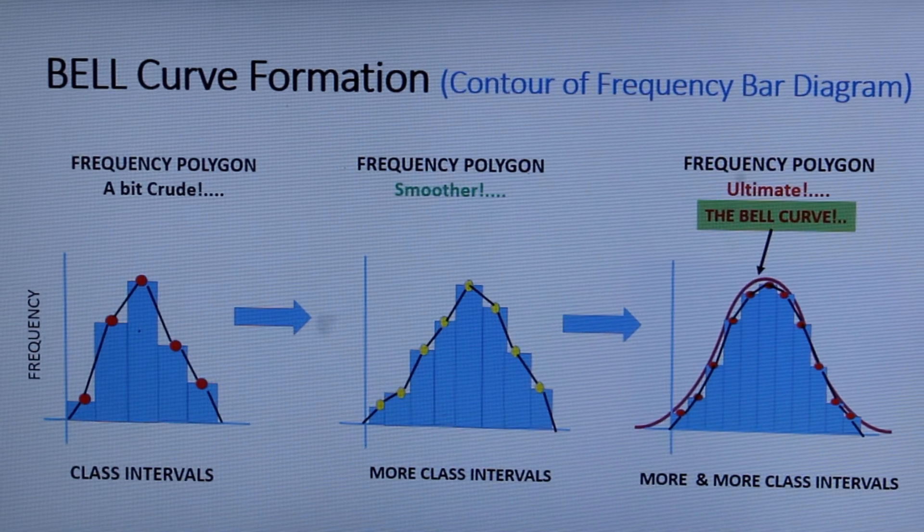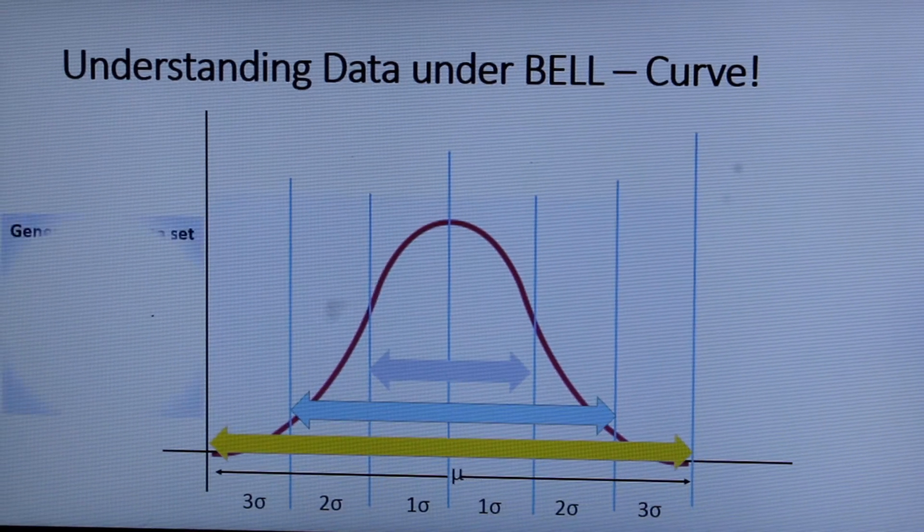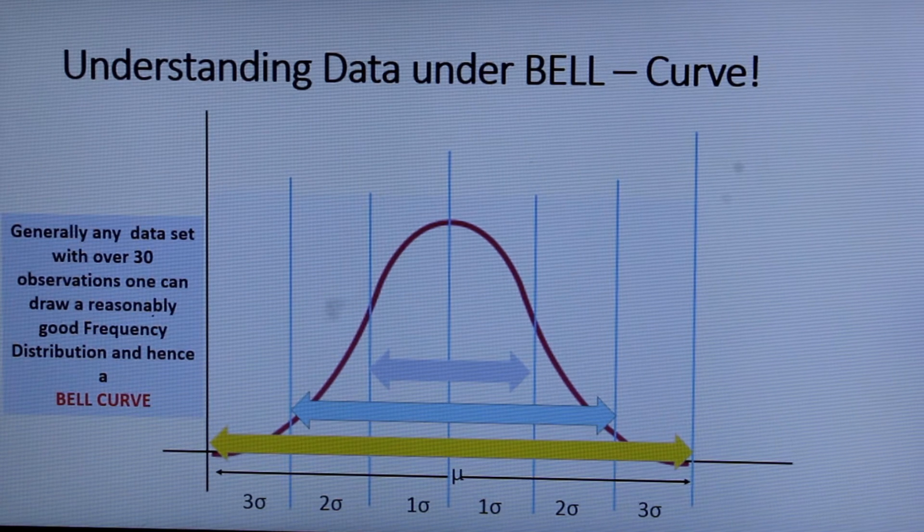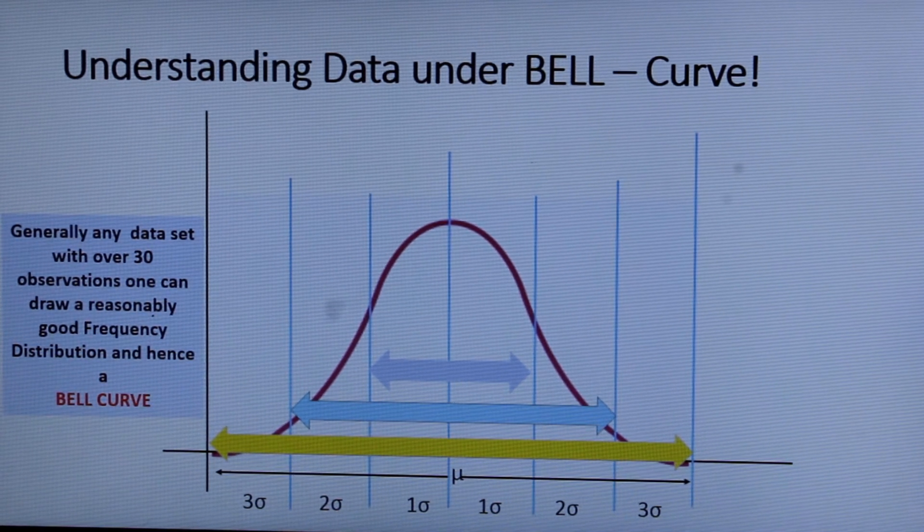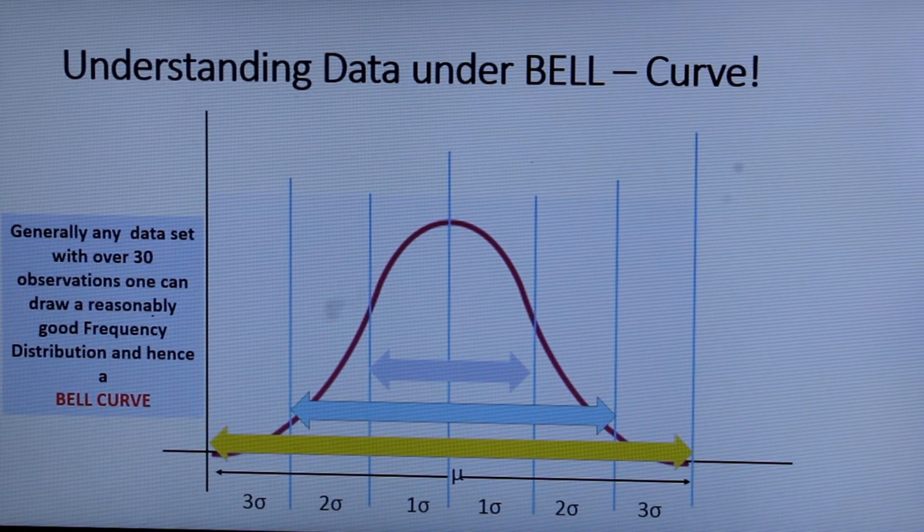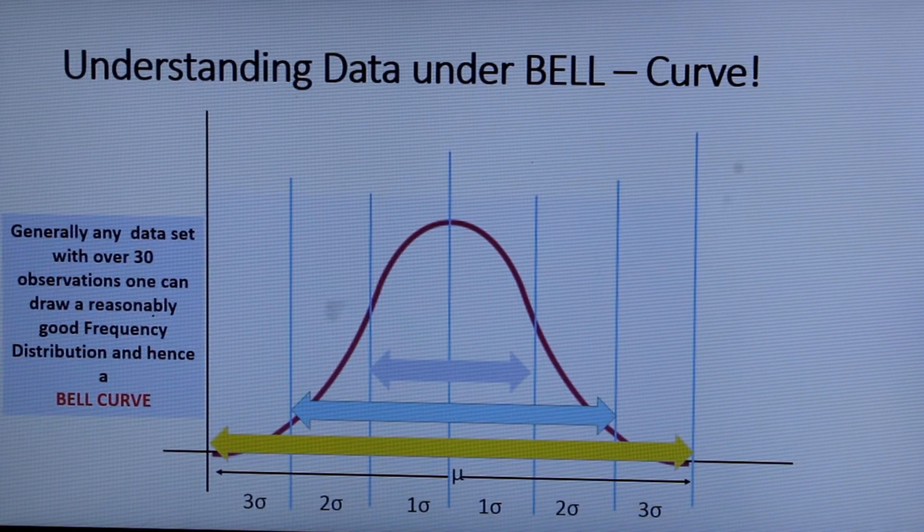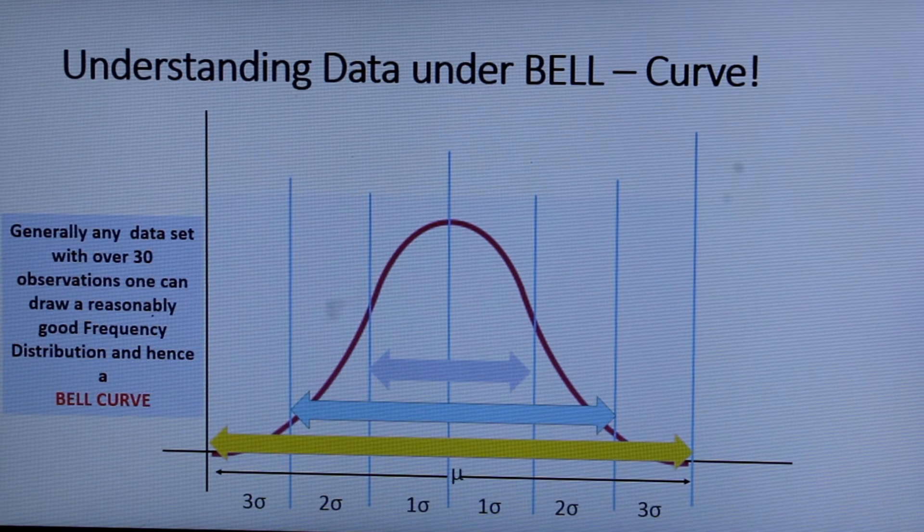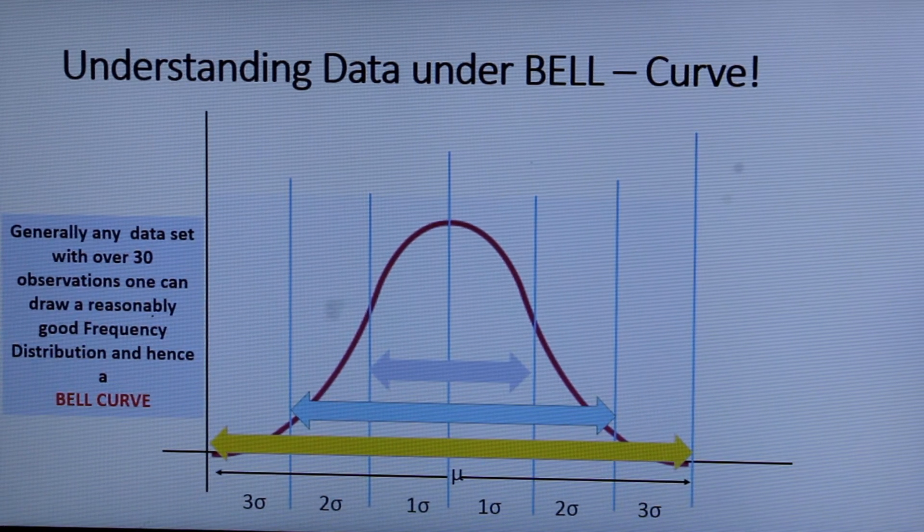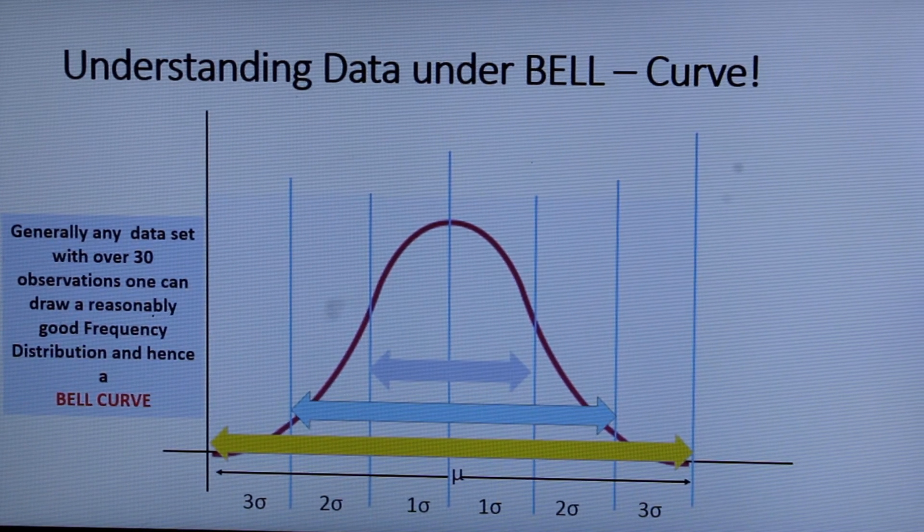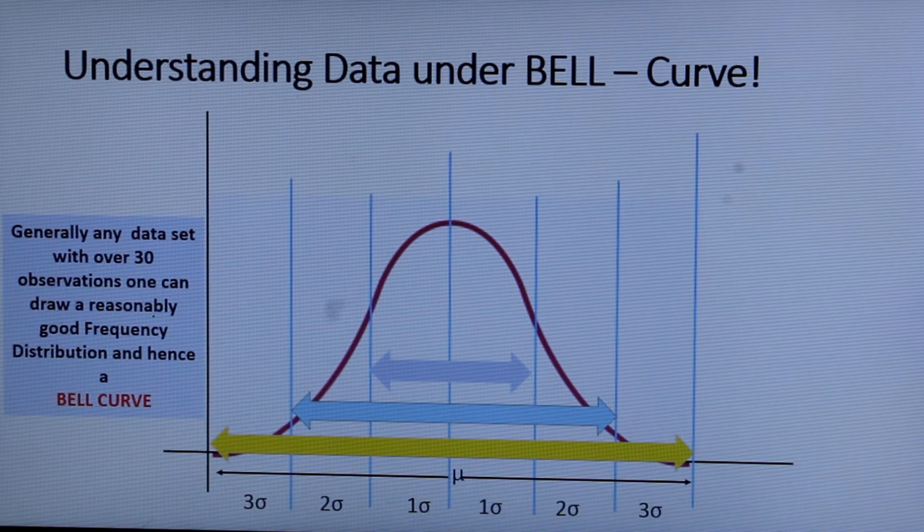That is the bell curve. Generally any data set with over 30 observations one can draw a reasonably good frequency distribution and hence you will get the bell curve. And that too if the data points are unbiased you will get a beautiful frequency distribution and also the bell curve.